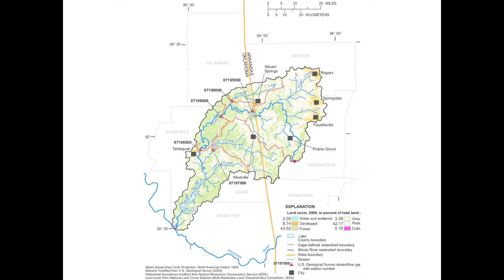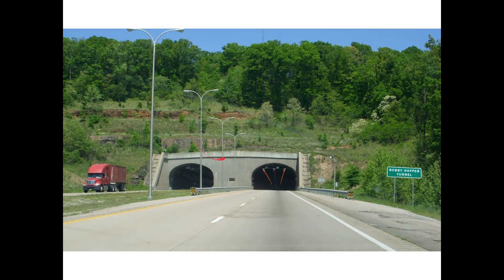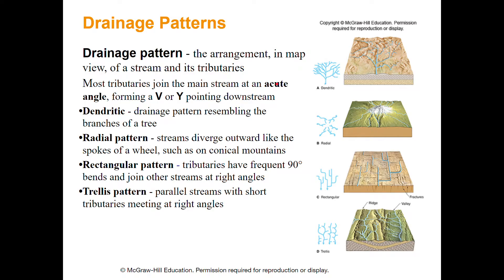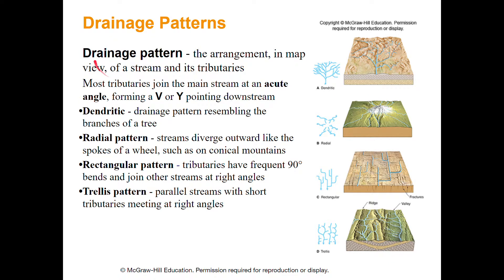Speaking of divides - if you've ever driven south to Fort Smith, you've driven through a big tunnel. It's one of the biggest tunnels in the region; to find a bigger one you might have to go to the Rockies or the Appalachians. This tunnel basically goes through the drainage divide: driving north to Fayetteville you're going downhill, and going back south to Fort Smith you're also going downhill. Everything on the north side flows mostly to the White River; everything on the south side flows south into Arkansas.